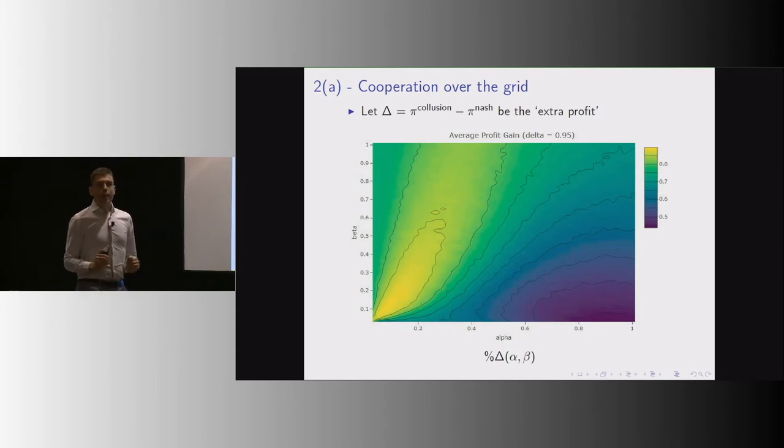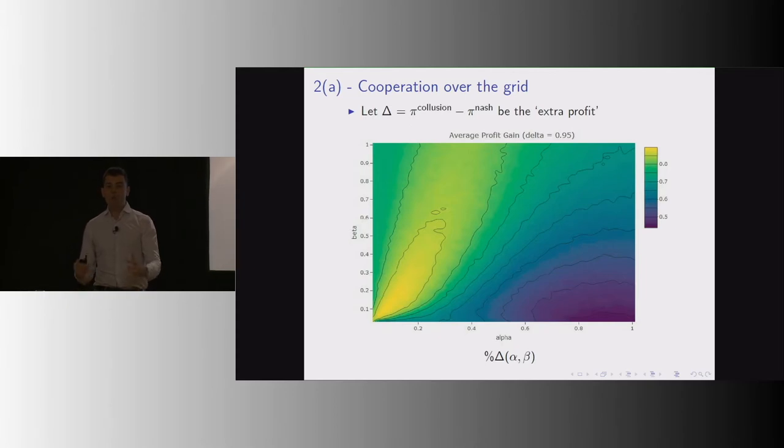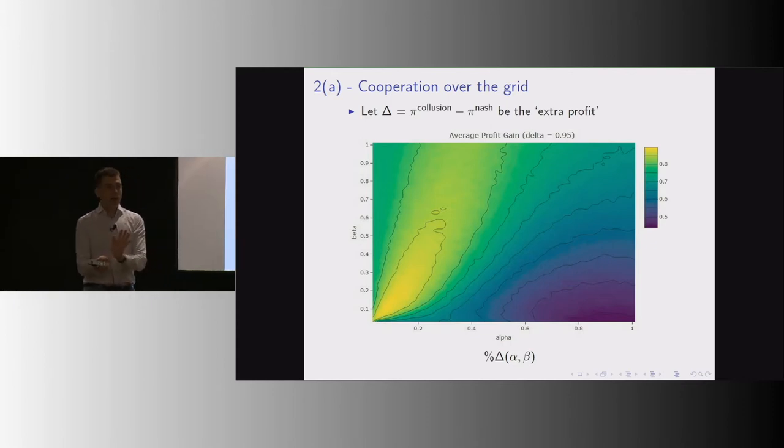How do we measure cooperation? We use this delta, which is the gap between the full collusive profits and the static Nash profits, and tell you what is the percentage of this delta which is ripped off by these algorithms, by these Q-learning agents.